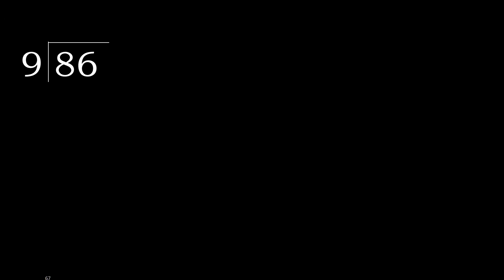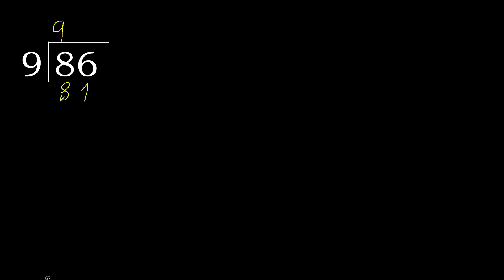86 divided by 9. 8 is less than 9, therefore move to the next digit. 86 is not less, so we work with 86. 9 multiplied by which number is nearest to 86 but not greater? 9 multiplied by 9 equals 81. 81 is not greater than 86.